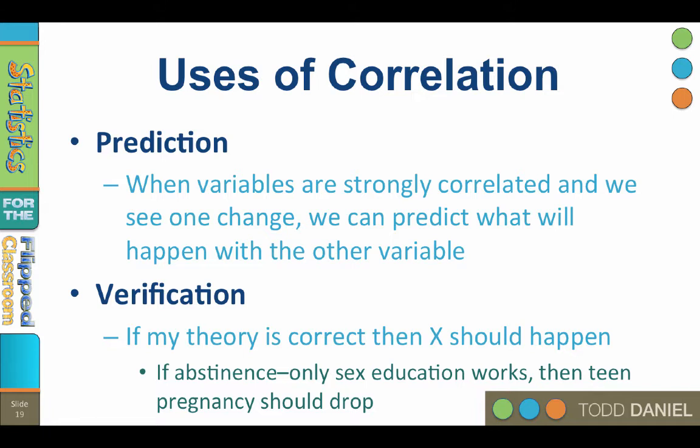The fourth use of correlation is for theory verification, or testing a theory. Remember that correlation does not imply causation. But if one variable is causing changes in another, they will be strongly correlated. I approach verification by saying: if my theory is correct, then this should happen. If the variables turn out to be uncorrelated, or if they are correlated in the wrong direction, then we conclude that one variable is certainly not causing changes in the other, and we know that theory is not correct.